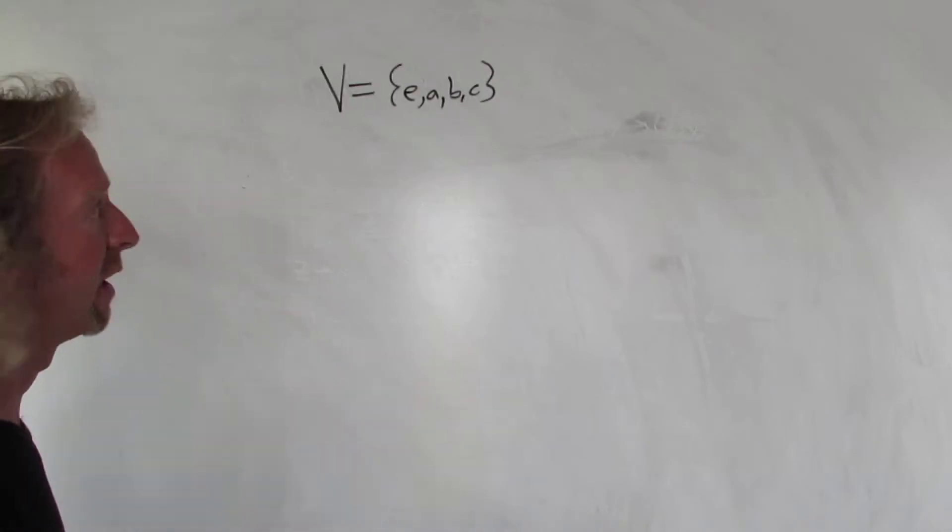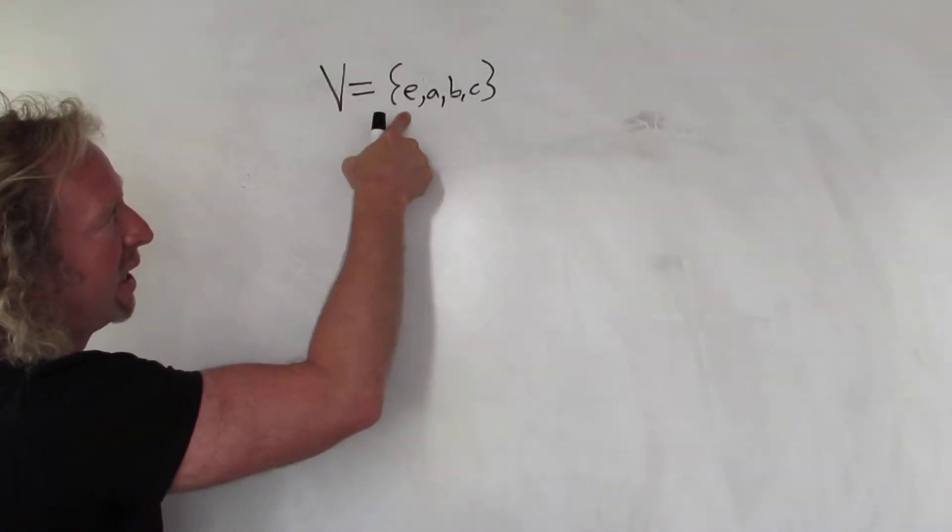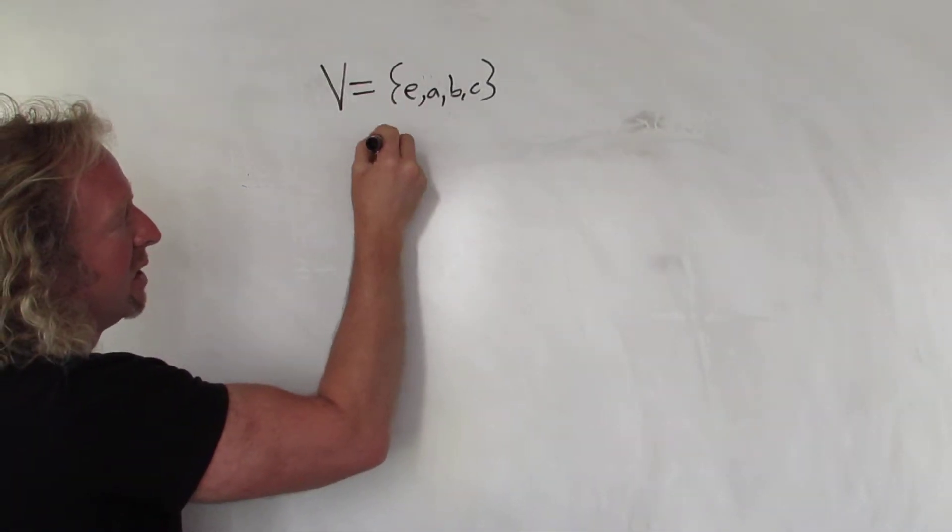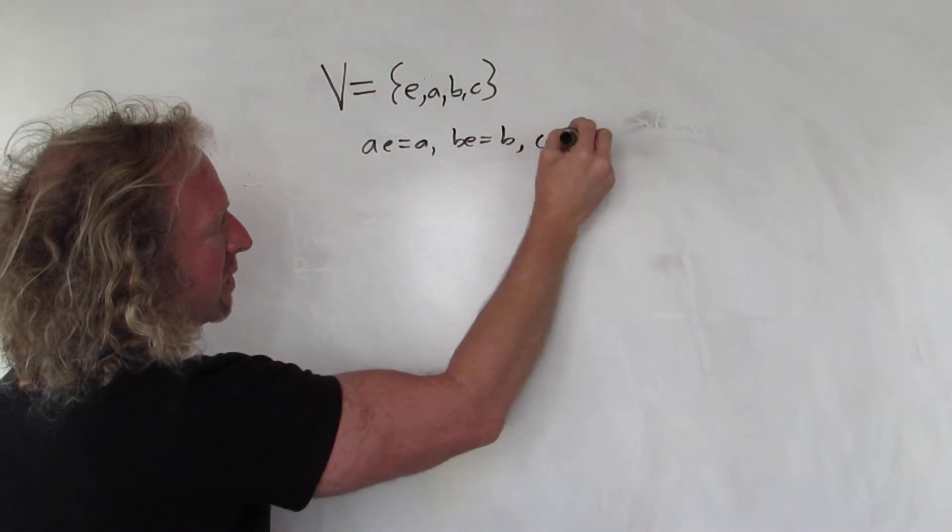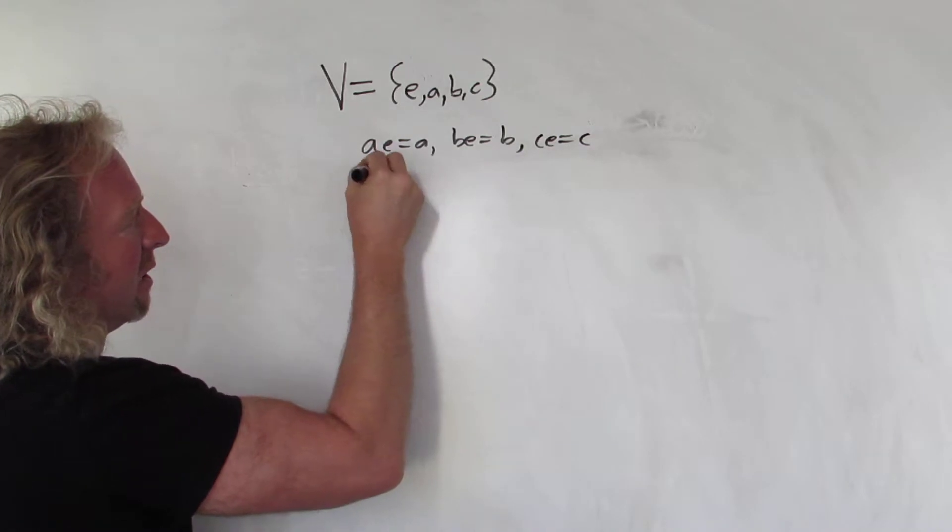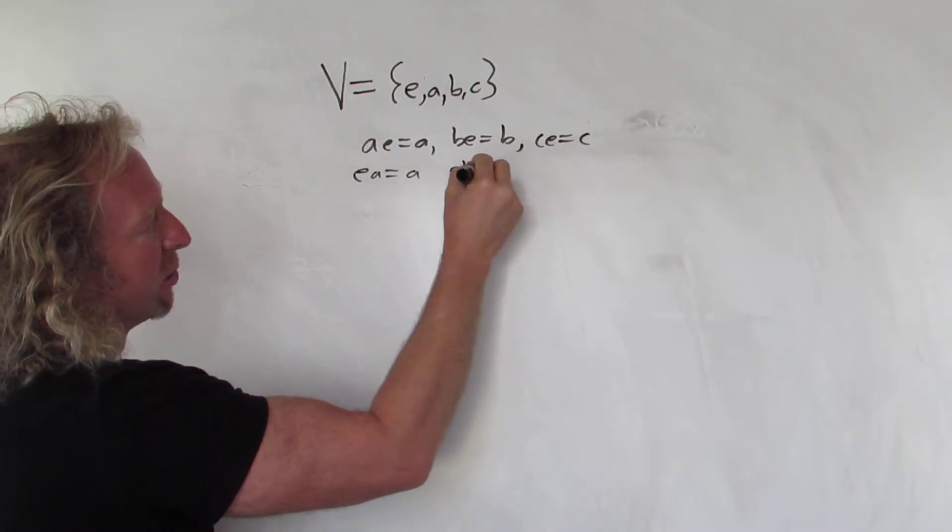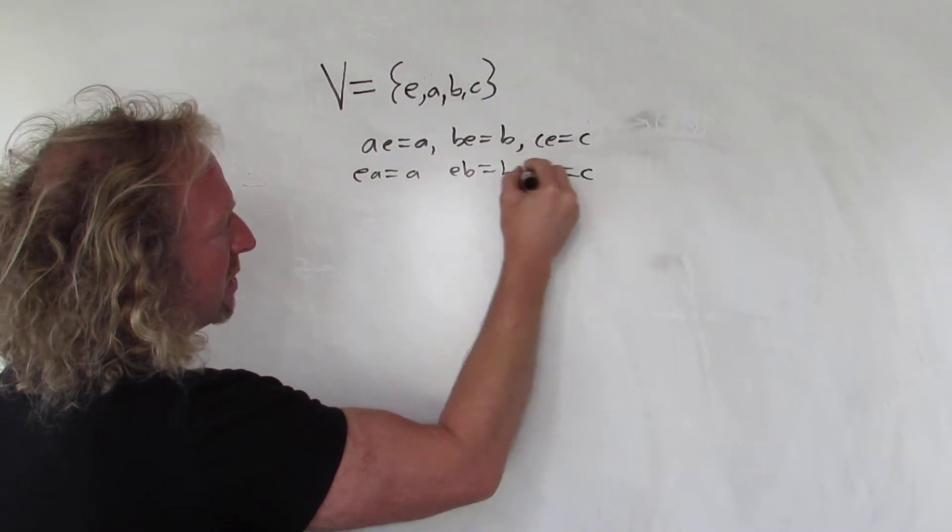It has four elements, if you're not familiar with it. E is the identity, so AE is equal to A, BE is equal to B, CE is equal to C. Likewise EA is equal to A, EB is equal to B, and EC is equal to C. So E is the identity.